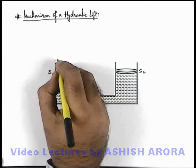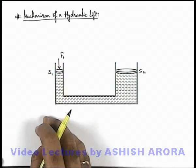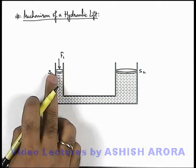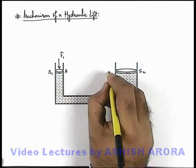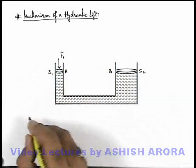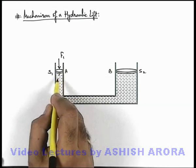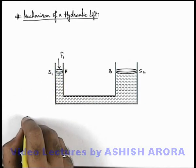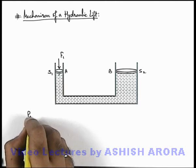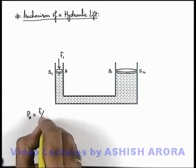Now, say we apply an external force F1 onto the narrow tube — say this is tube A and this is tube B. Then we can say just below the piston a pressure increment will be there, which can be written as: pressure at point A equals F1 divided by S1.